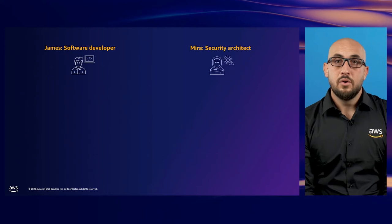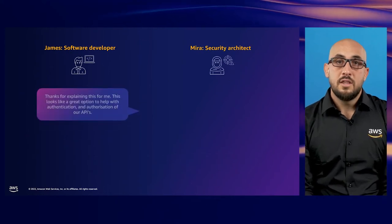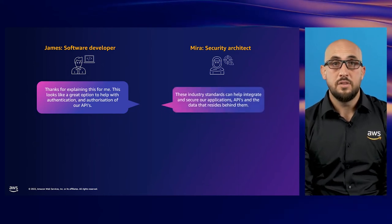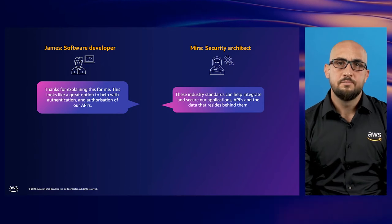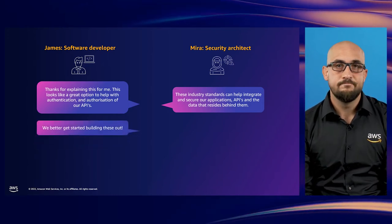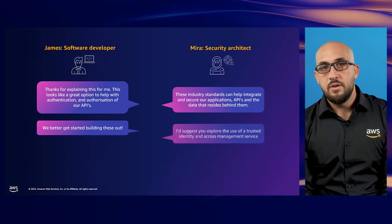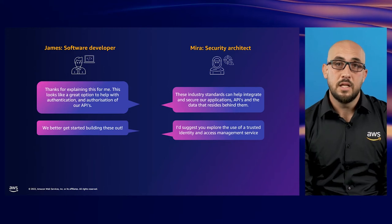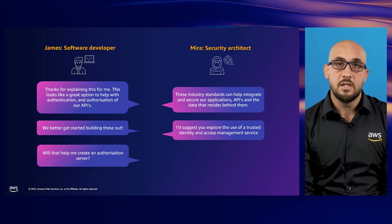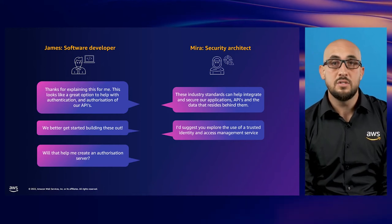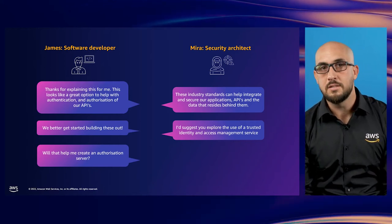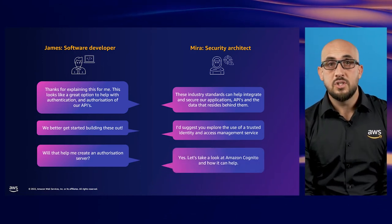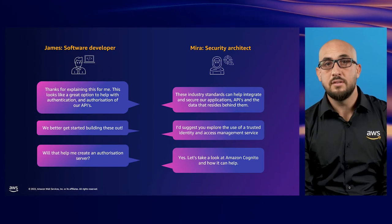Let's lean in on our personas' conversation again. Now that we have a better understanding of these industry standards and how they can help James with his application design, should he develop all this from scratch? With the use of a trusted identity and access management service, or IDAM, this can help developers build secure applications quickly and efficiently, and ultimately help Mira sleep at night knowing that hosted applications are using best practices. Let's dive into Amazon Cognito, which Mira has suggested, to understand how it can solve the application identity problem.